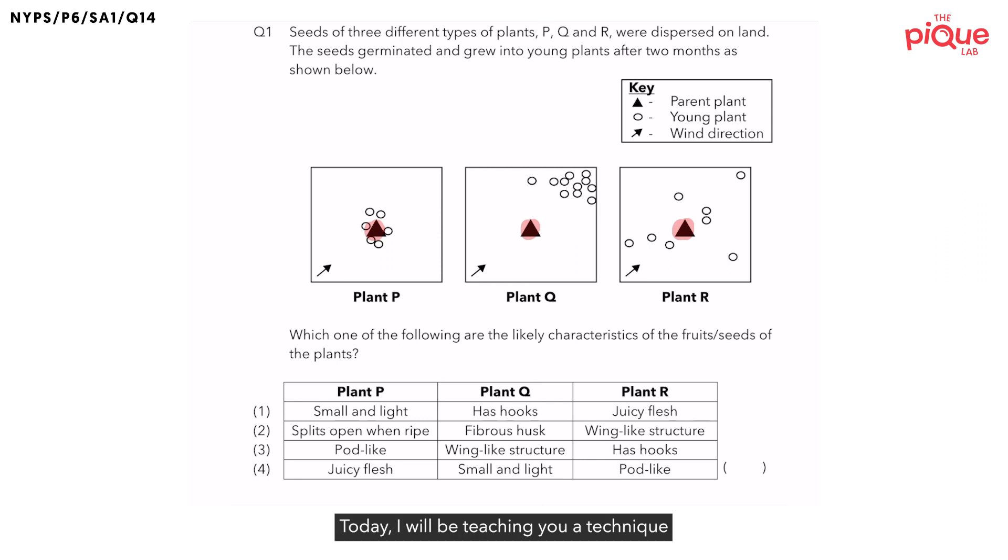Today, I will be teaching you a technique to solve such questions. But before I introduce the technique, let us do a quick recap on the different methods of seed dispersal. Can you recall what are the four methods of seed dispersal? Firstly, we have wind, water, by animals, and lastly, seeds that are dispersed by splitting.